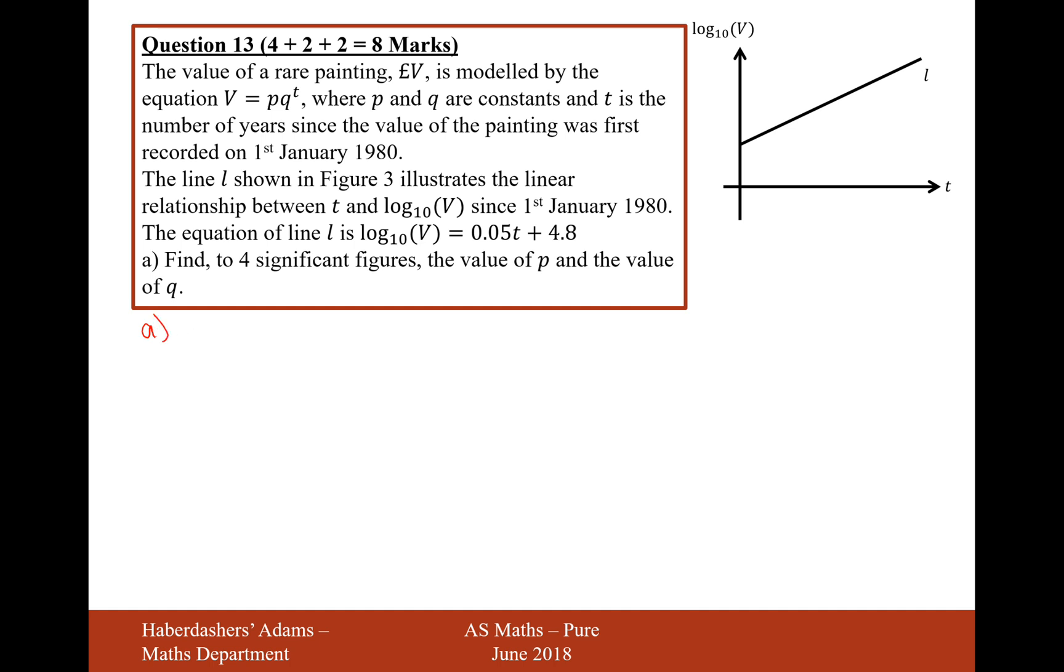This is just a rearranging question, so it's going to be log base 10 of V equals 0.05T plus 4.8. What we'll do is we'll raise both sides to the power of 10, because that will undo the log base 10 on the other side. 10 is now the base of an indice on both sides, so it's V equals 10 to the power of 0.05T plus 4.8. All of that equation is now the power of 10.